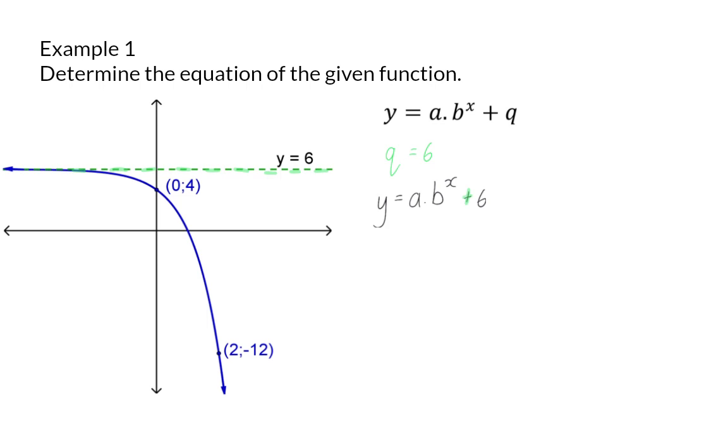Now, we need to determine the values for a and b, and we were given two extra coordinates on our sketch. If one of the given coordinates is an x or y intercept, I will advise you to always substitute that one first.